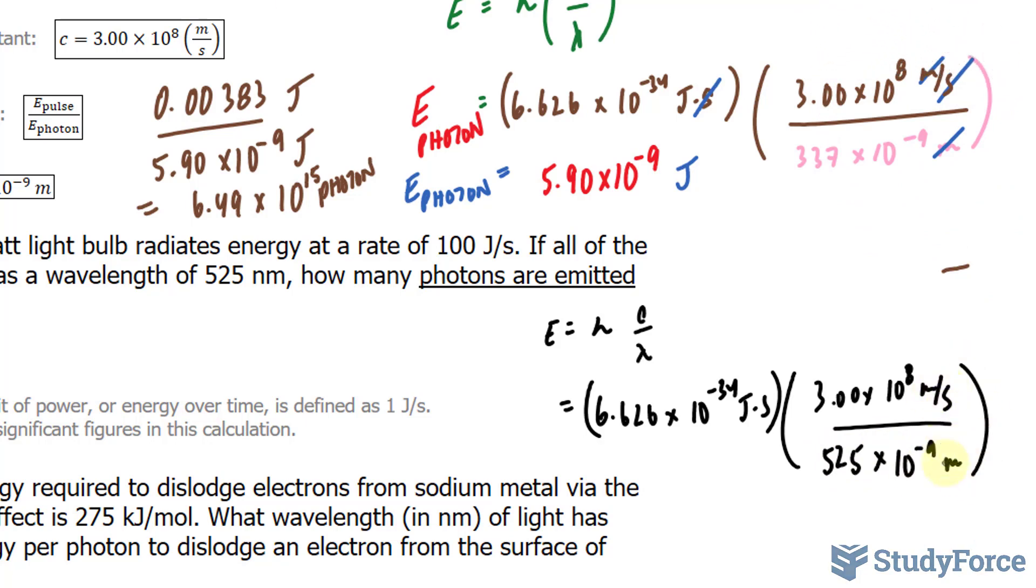What will happen now is this meter's unit and this meter's unit will go away. This seconds and this seconds will go away and we'll have a number that's completely in joules per photon. So I'll write down E subscript photon.